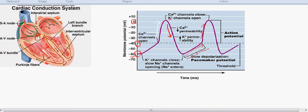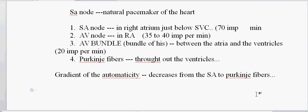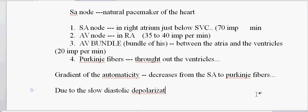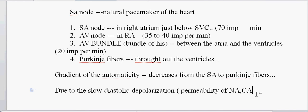This slow depolarization happens around the diastolic period. So the main reason for automaticity is due to the slow diastolic depolarization, which involves the permeability of sodium and calcium ions (Ca²⁺). This is the main reason where the SA node can create its own electrical impulse.